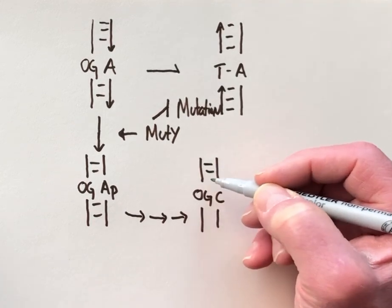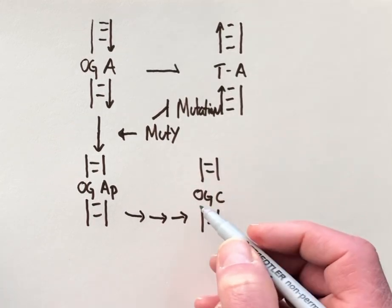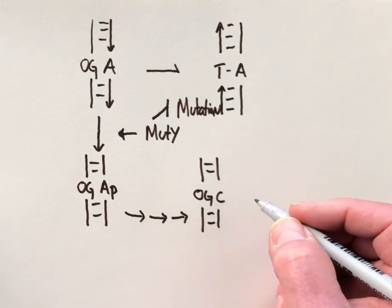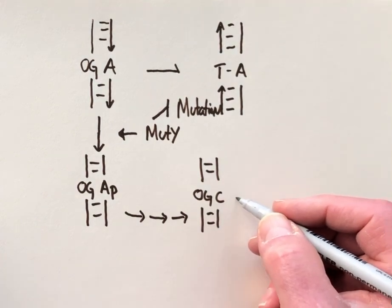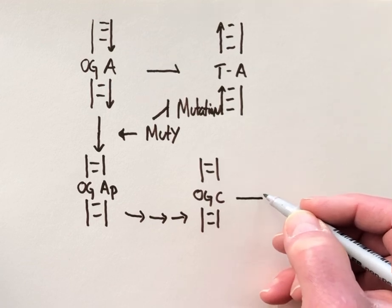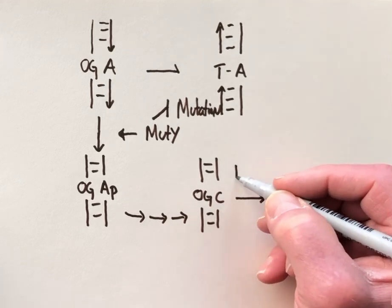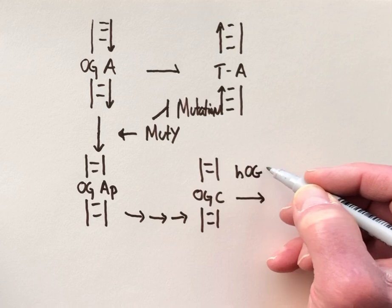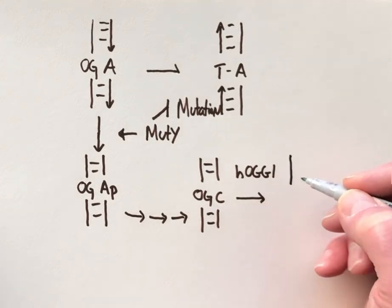Which is still problematic in that the guanine is oxidized. But there's another enzyme called MutM in bacteria or hAGG-1 in humans that removes the OG.